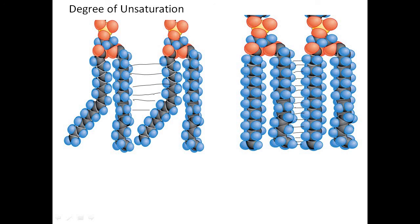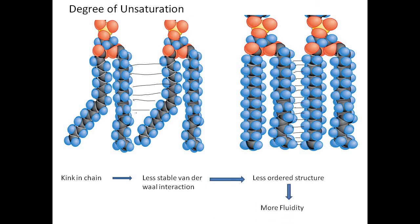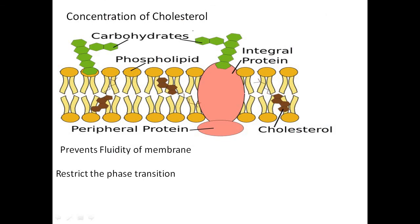Because kinks interfere with van der Waals force formation and prevent tight packing, the membrane becomes more fluid. In summary: kinks in the chain lead to less van der Waals interaction, less ordered structure, and more fluidity. The third factor is the concentration of cholesterol. Cholesterol consists of a steroid ring and a hydrophilic hydroxyl group. Interaction between the steroid ring and the lipid chains makes the membrane more tightly packaged and rigid. Cholesterol prevents membrane fluidity and also restricts the phase transition between fluid and rigid states.